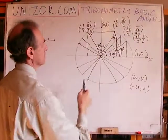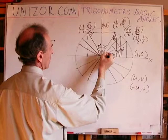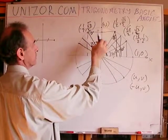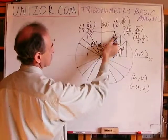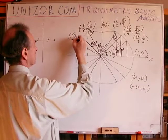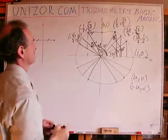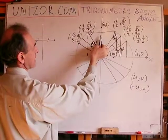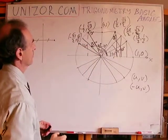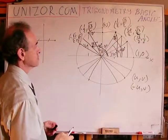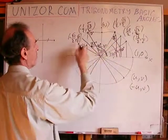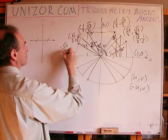Similarly, 135 degrees is symmetrical to 45 degrees relative to the y-axis, giving coordinates (−√2/2, √2/2). And 150 degrees is 90+60, symmetrical to 30 degrees which is 90−60, so the coordinates are (−√3/2, 1/2). At 180 degrees the coordinates are (−1, 0).